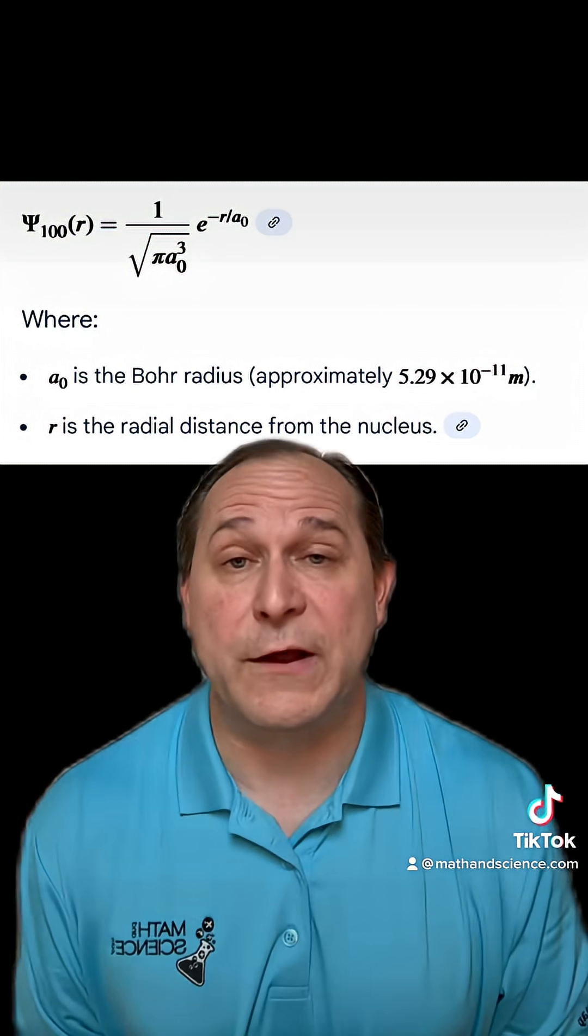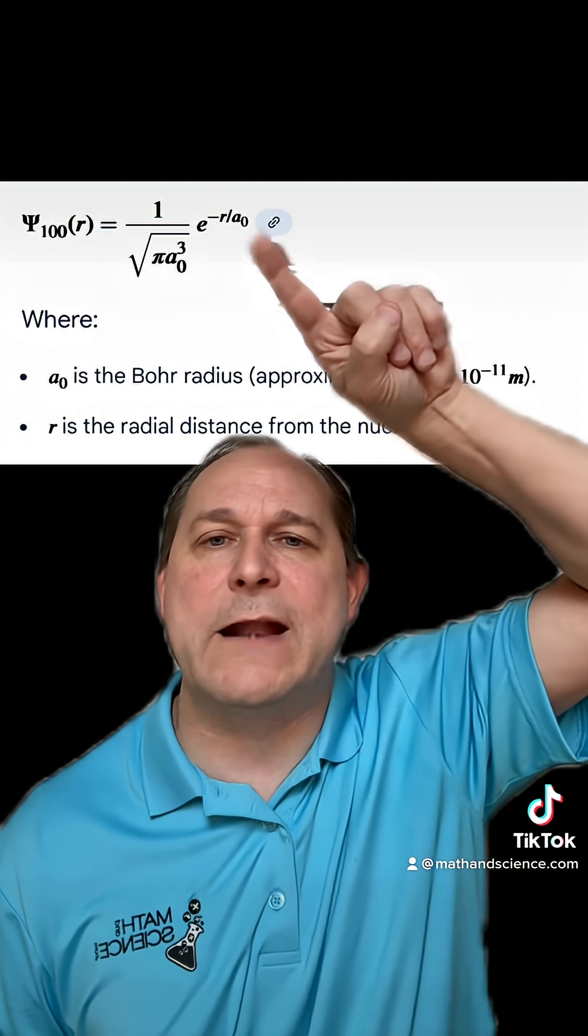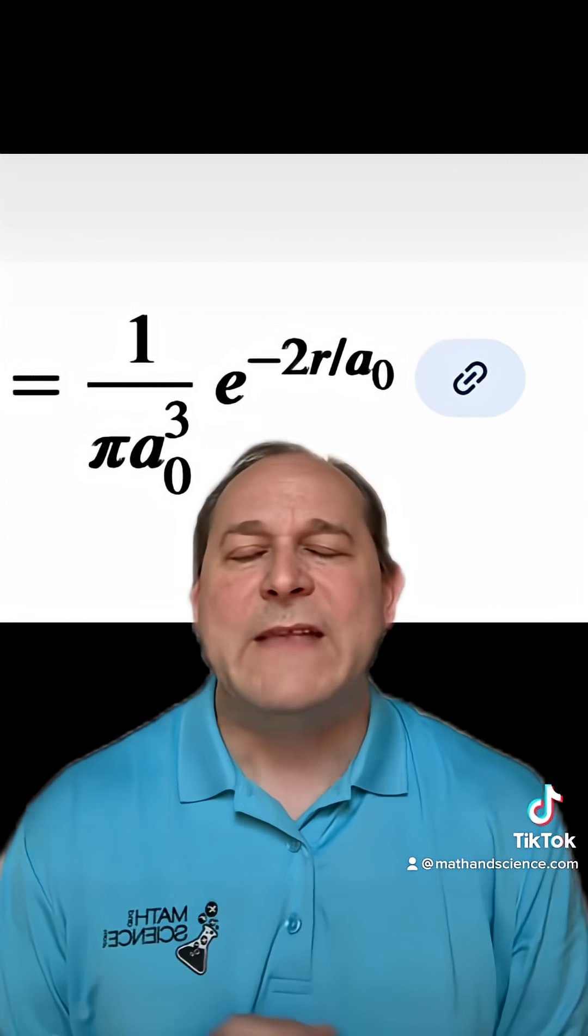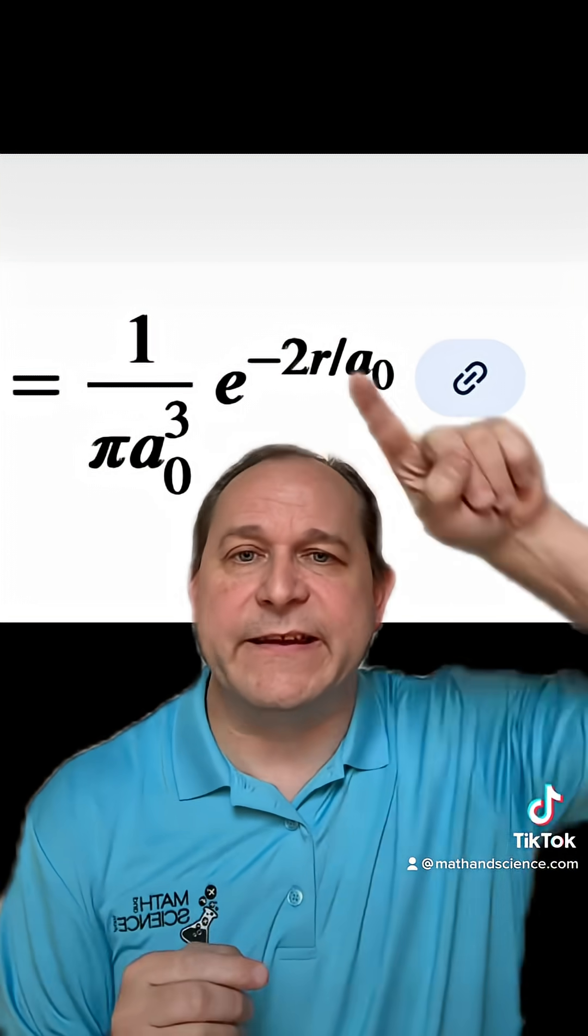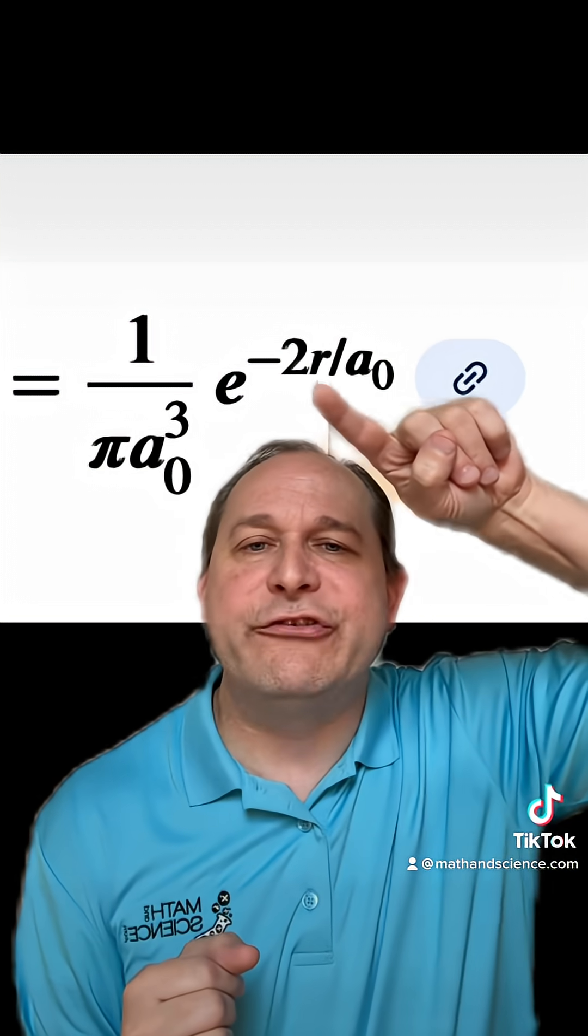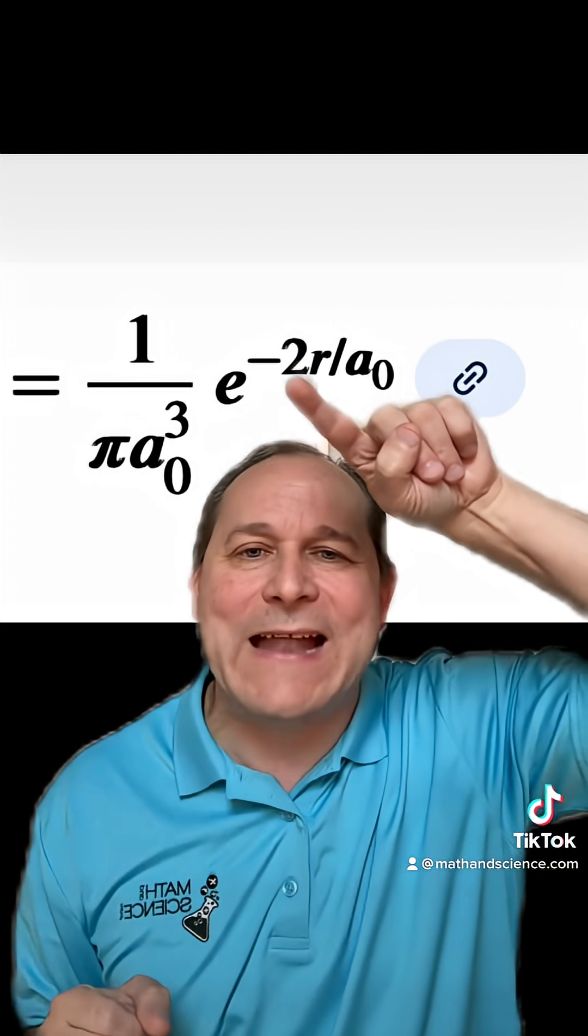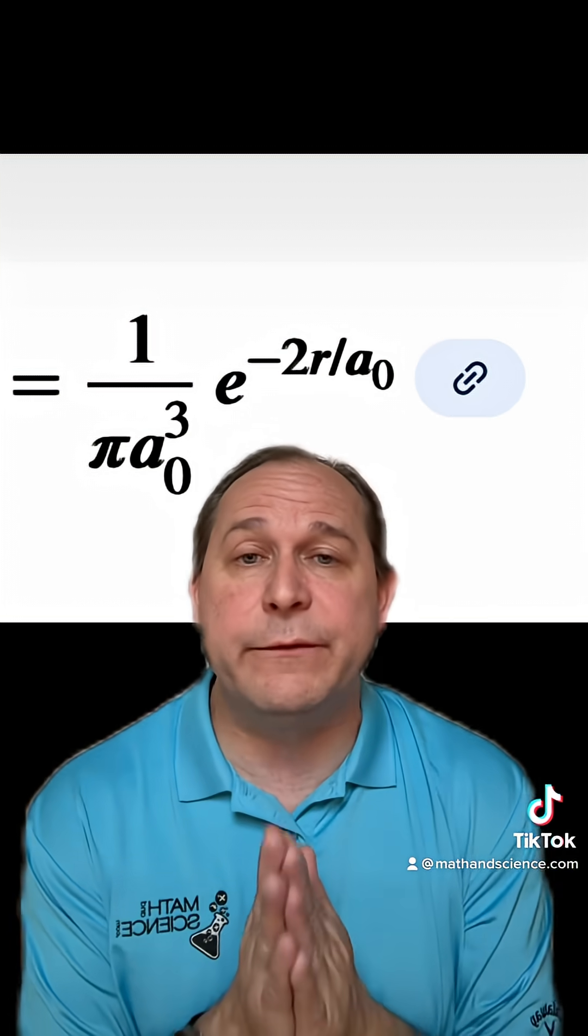Here is the wave function for an electron around a hydrogen atom. There's a constant here. The constant doesn't matter. E to the minus R. That's all I want you to focus on now. When you square that wave function, that's what gives you the probability density. You end up with an E to the minus 2R there. That means as the radius, you get farther and farther away from the atom, the probability never gets to zero. It just gets infinitely close to zero.